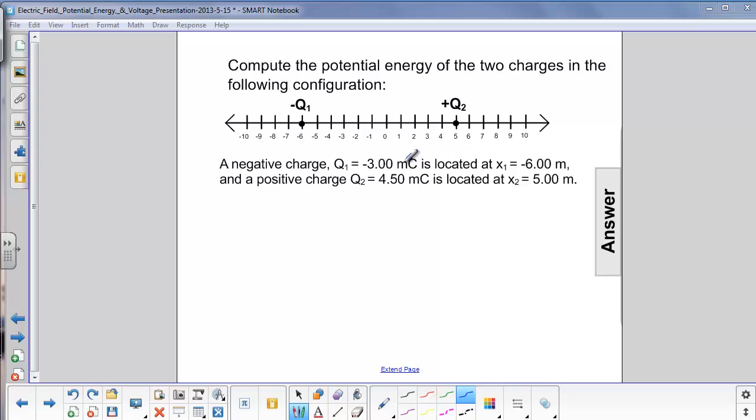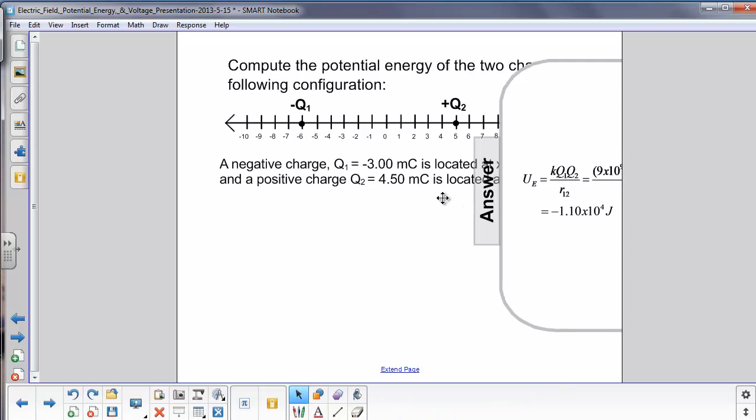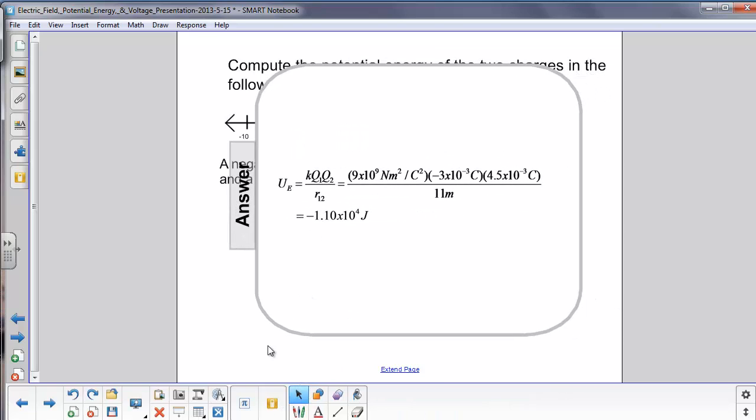And we also know that milli is 10 to the minus 3. So we use the potential energy equation, which is k times q1 times q2 divided by r12, where r12 is the distance between the two charges. Here's the negative sign of the first charge, negative 3. Here's the 10 to the minus 3 for millicoulombs. Here's the other charge. In this case, we get a negative potential energy of negative 1.10 times 10 to the fourth joules.